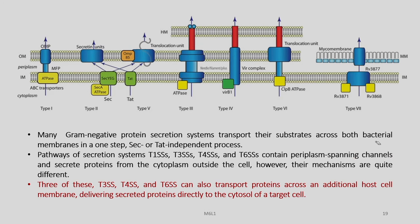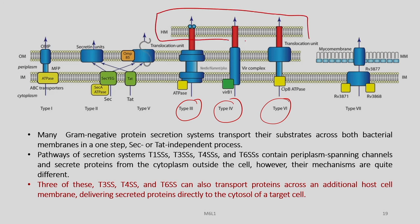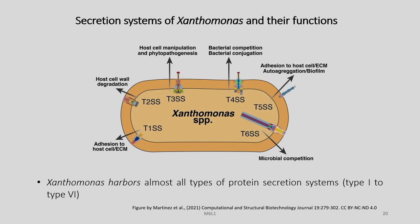The mechanisms of T1, T3, T4, and T6 are quite different from each other. Three of these—T3, T4, and T6—can also transport proteins across an additional host membrane, injecting through the host cell wall or membrane and delivering secreted proteins directly into the cytosol of the target cell. Looking at the various secretion systems of Xanthomonas: T2 is responsible for host cell wall degradation, T1 for adhesion to host cell and extracellular matrix, T6 for microbial competition, T5 for adhesion to host cell and biofilm production, and T4SS for bacterial conjugation.